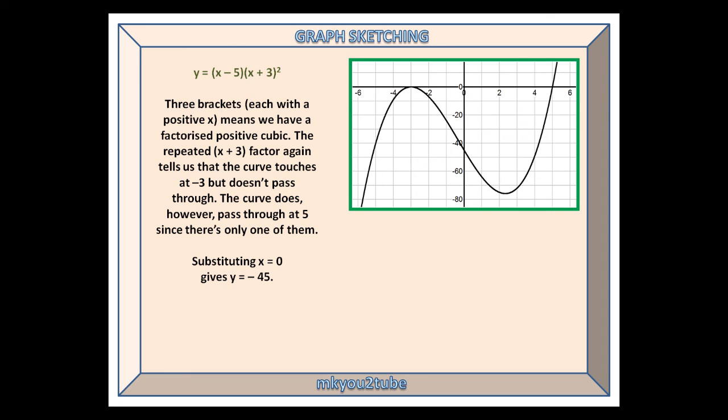The curve does, however, pass through at 5, since there is only one of them. Substituting x equals 0 gives y equals minus 45. And that is all there is to it.